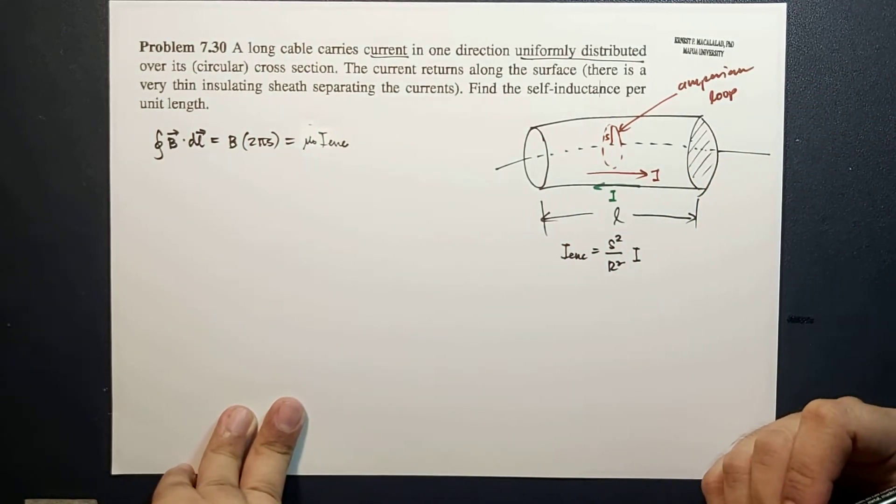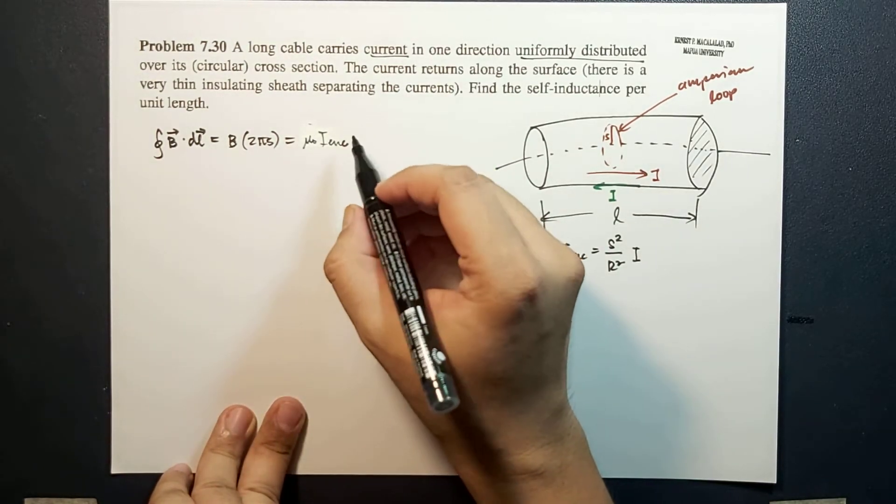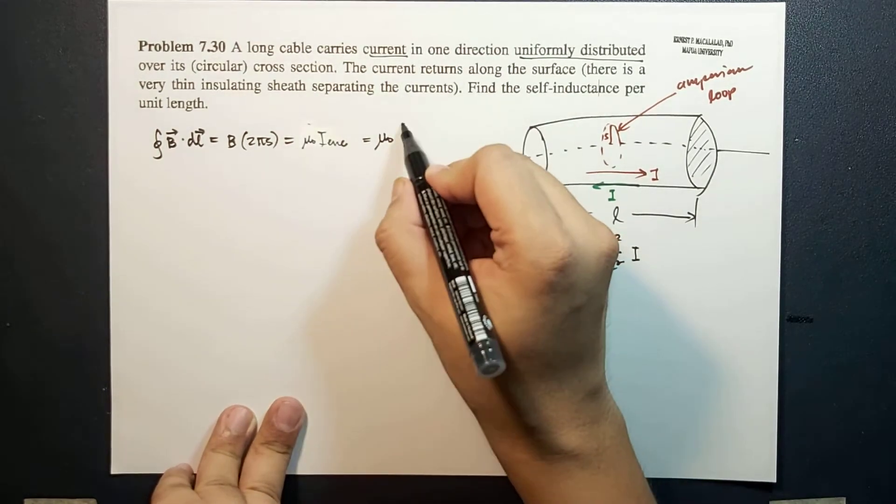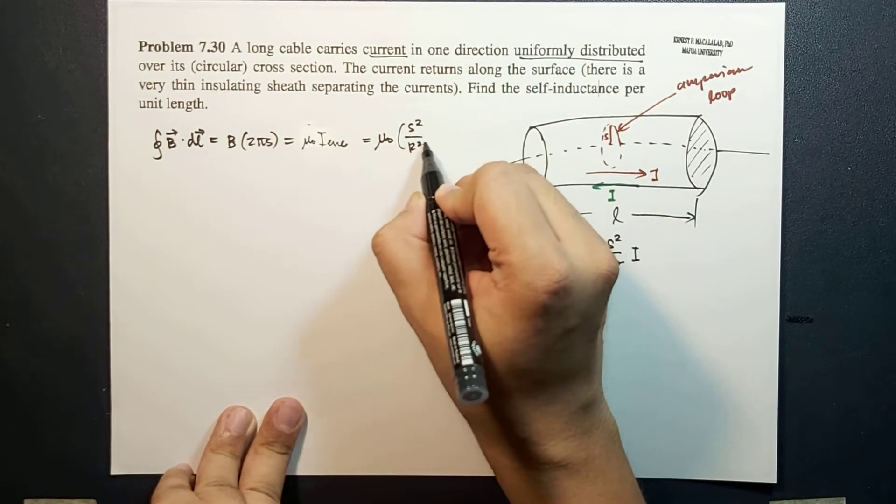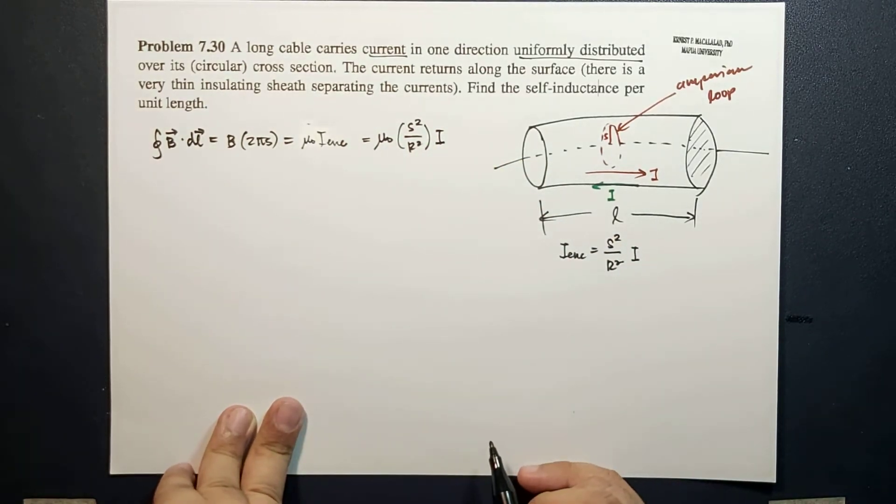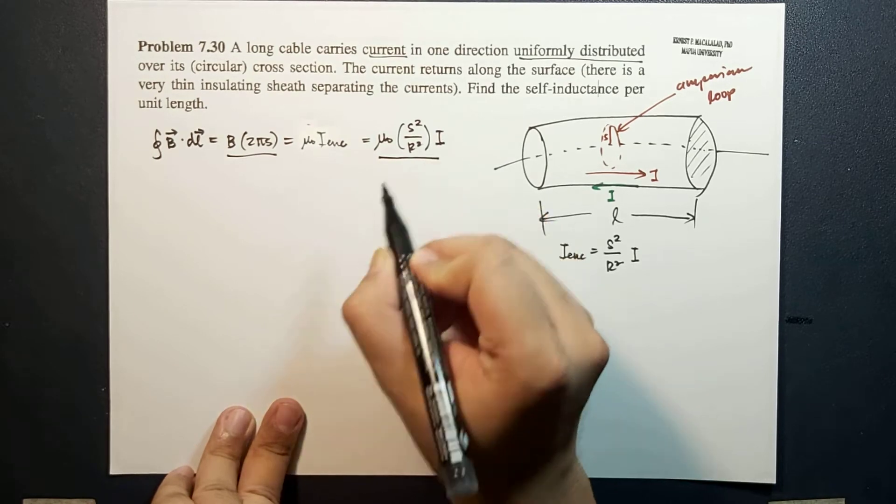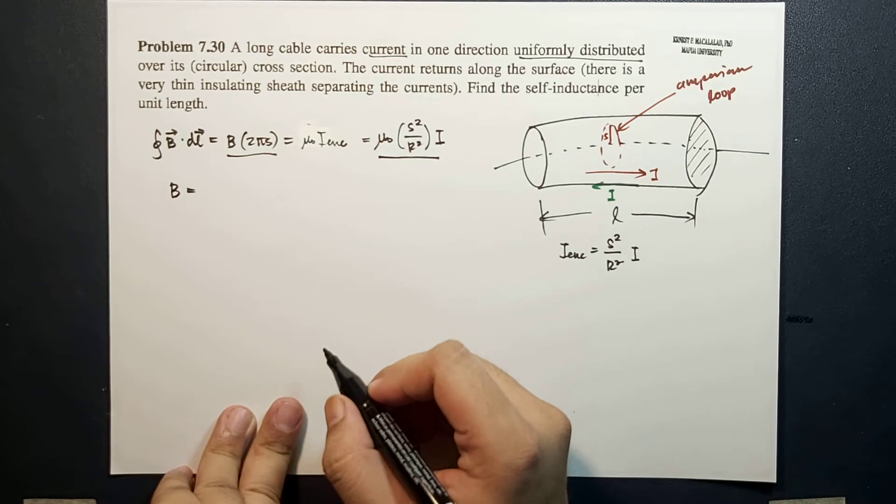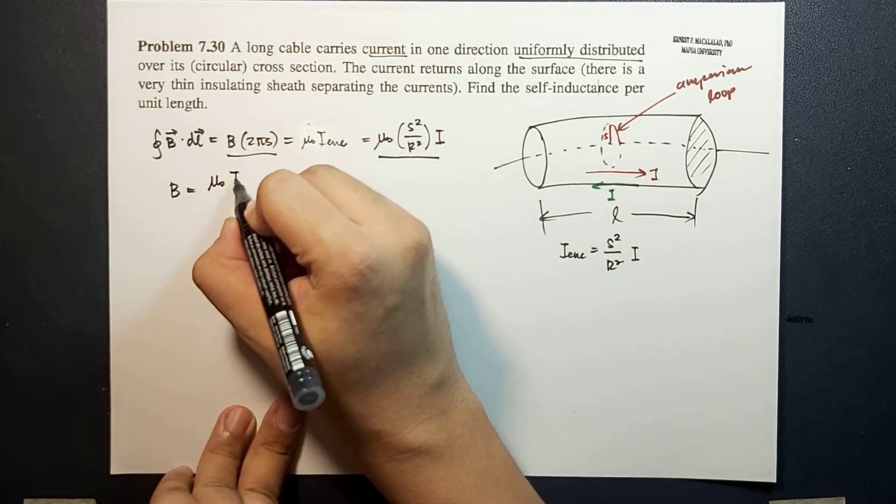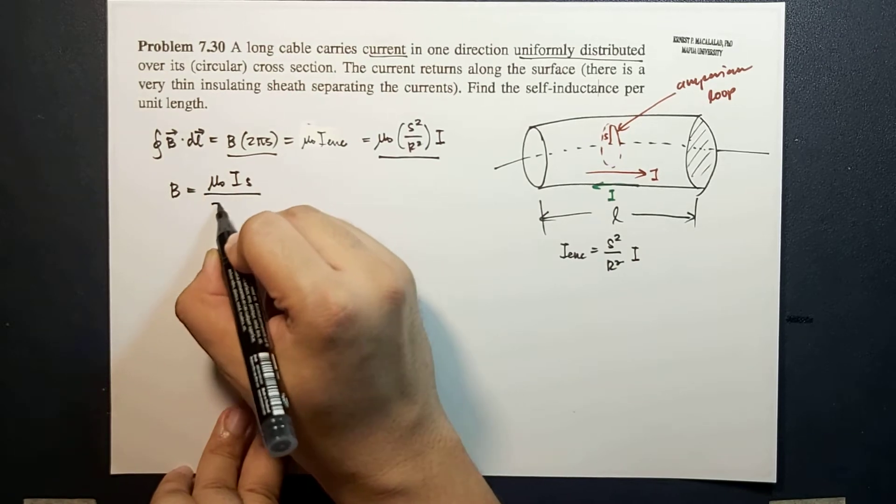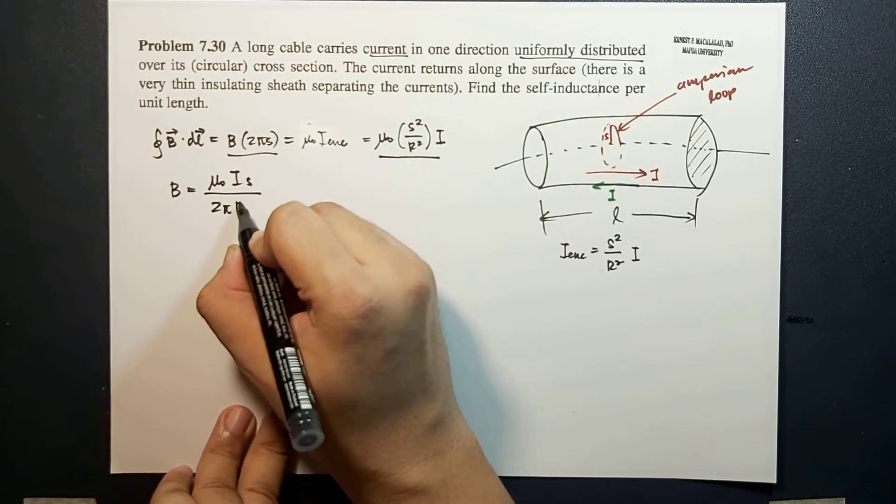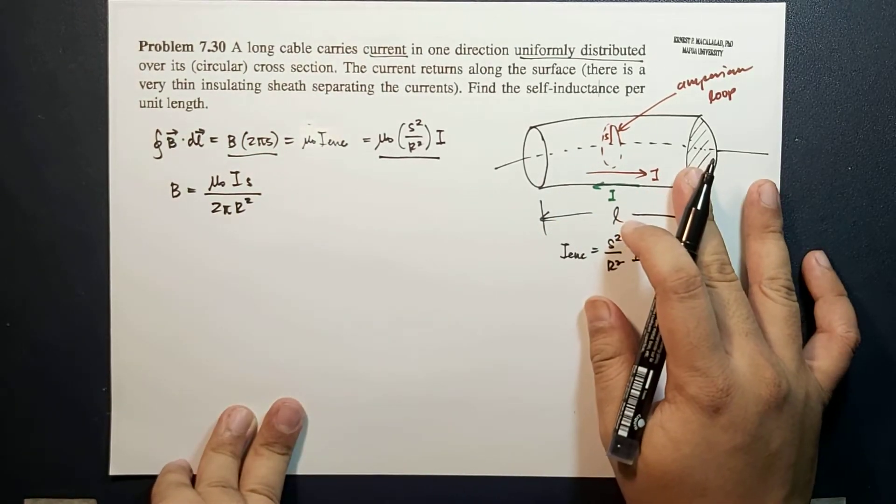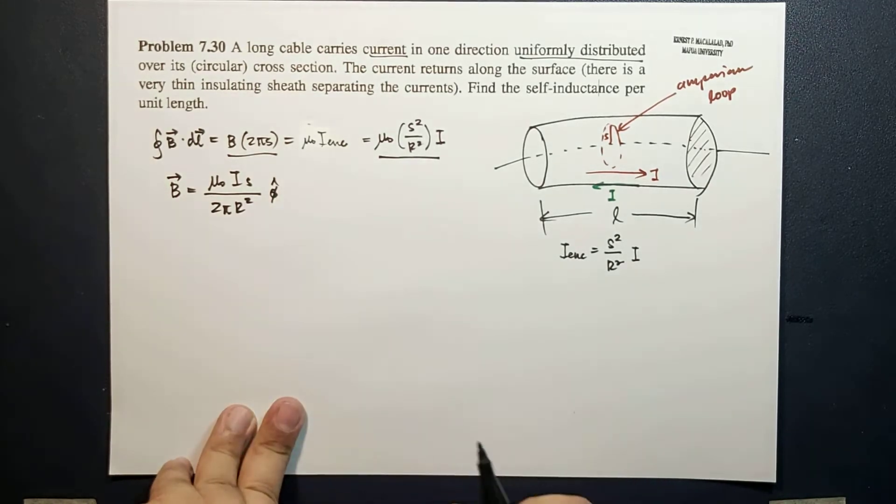Substituting this here, this becomes μ₀ times S²/R² times I. Substituting on this side, we end up with B equal to μ₀IS/(2πR²). So this is the magnitude of the magnetic field. The direction would be φ hat.